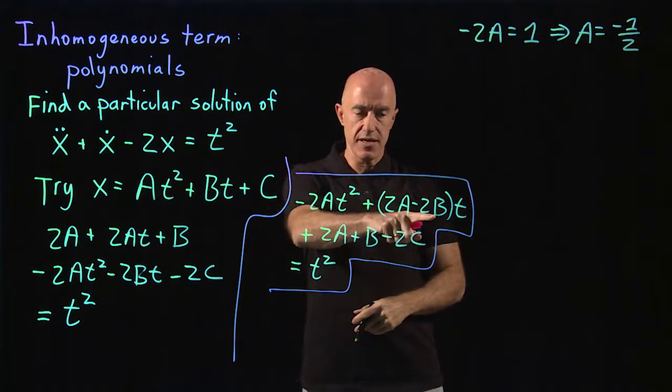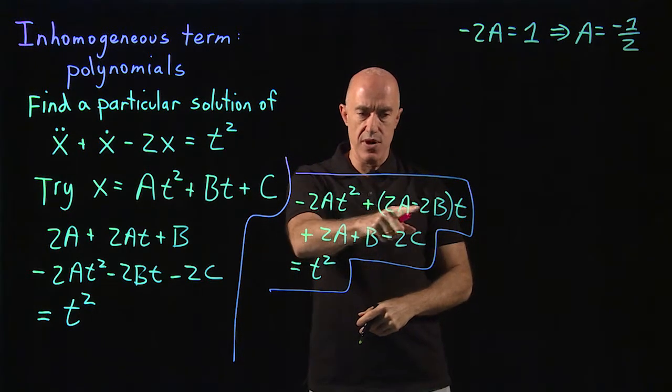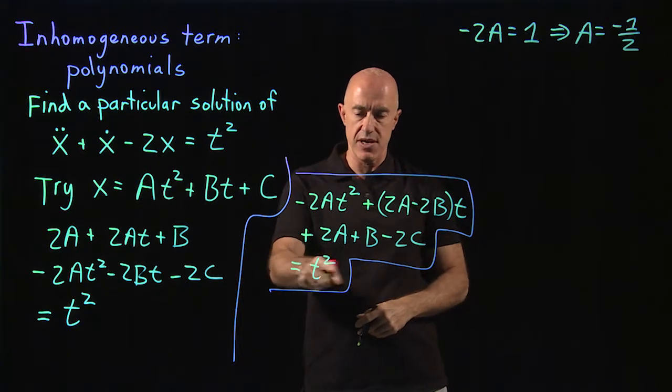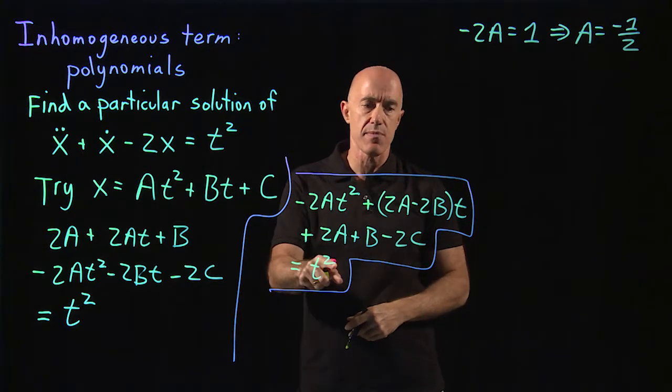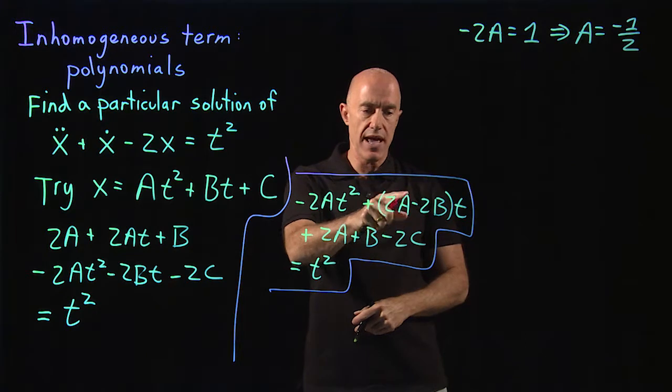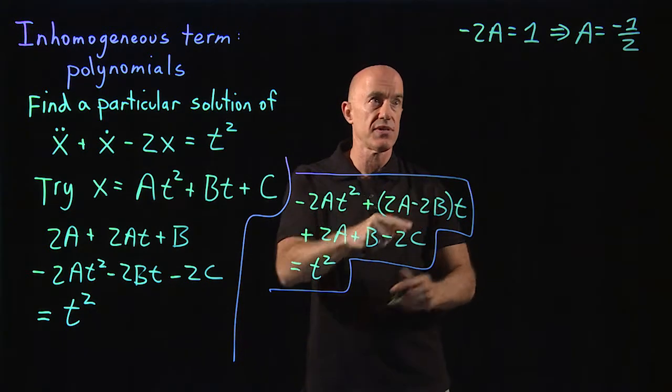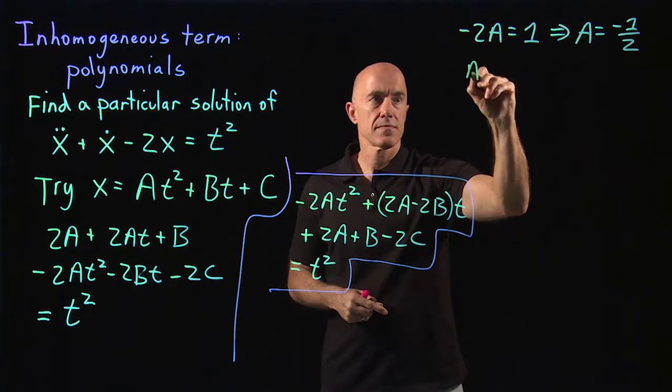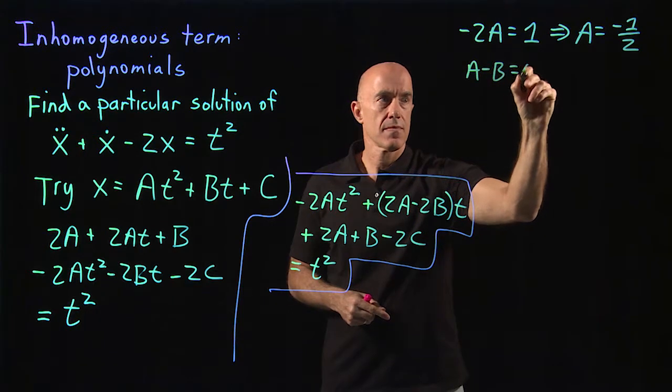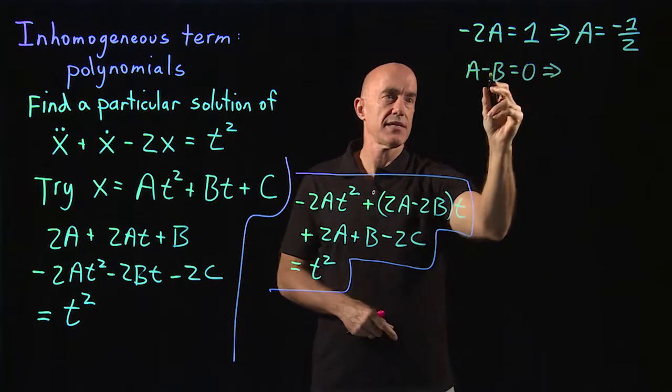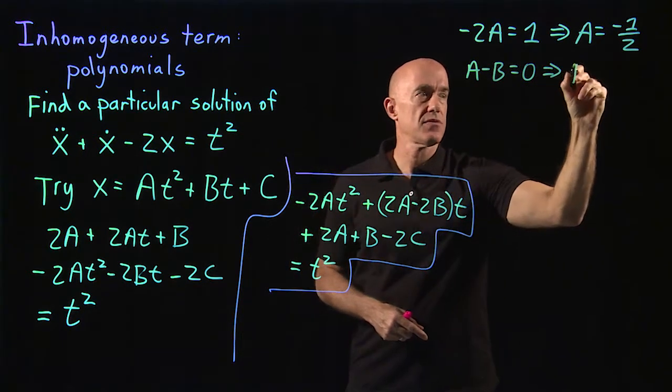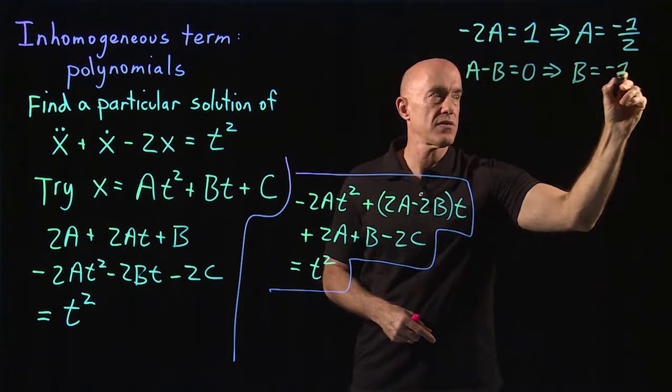The second equation is 2a minus 2b equals 0 because there's no t term on the right-hand side. So a minus b equals 0, which tells us that b is equal to a. So b is also equal to minus 1 half.